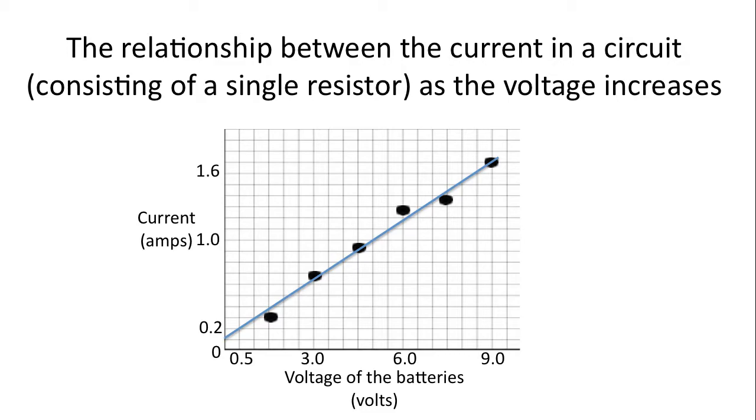Now we've created a line of best fit. A few notes about a line of best fit. A rule of thumb is that there should be an equal number of data points above and below the line of best fit.